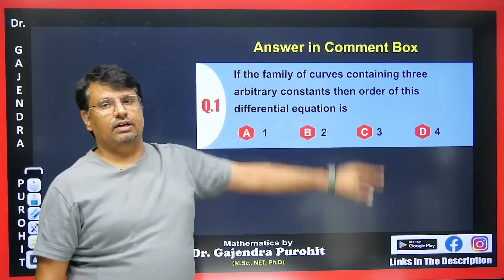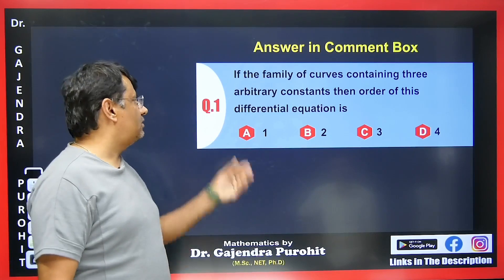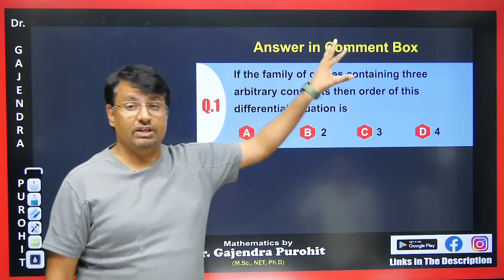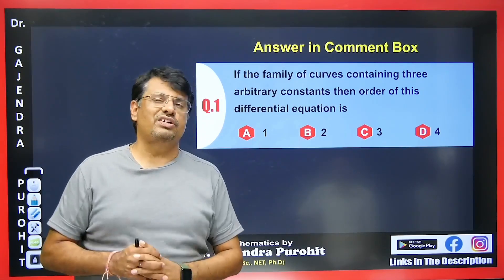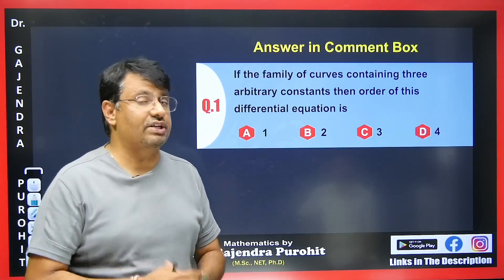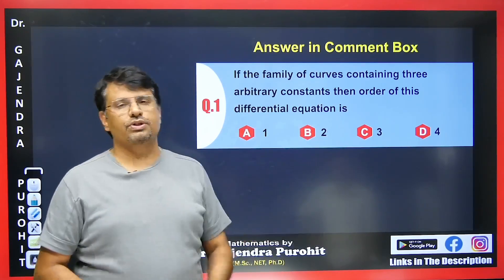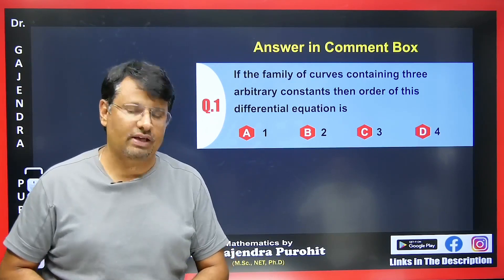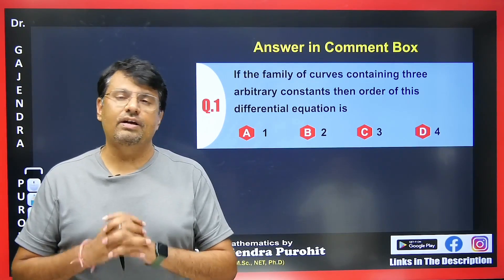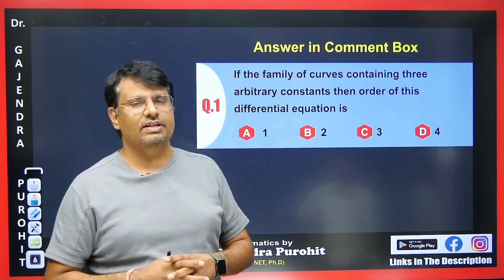Now this question is given: for the family of curves containing three arbitrary constants, the order of the differential equation is — there are four options. Tell me the answer in the comment box below. How many seconds did it take you to solve this? Please comment and let me know if you are liking the content.